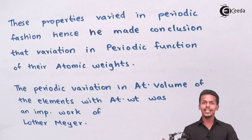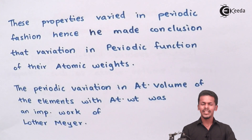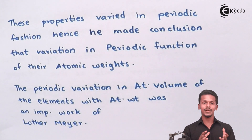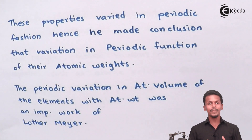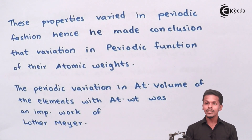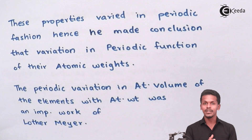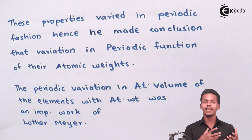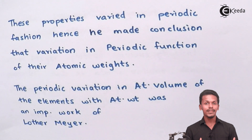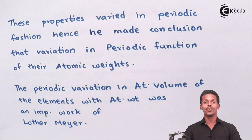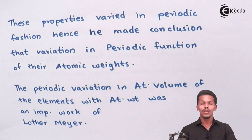The modern periodic table deals with atomic number, while previous scientists stuck to atomic weight. Lothar Meyer's more advanced contribution was providing detailed physical properties like melting point and boiling point for each element, which helped evolve the concept of making a periodic table. This was the importance of Lothar Meyer's arrangement of elements.